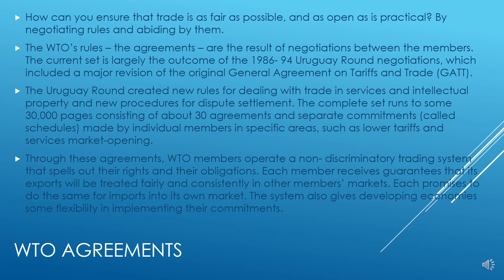The WTO agreements consist of about 30 agreements and separate commitments known as schedules, made by individual members in specific areas such as lower tariffs and services market opening. Through these agreements, WTO members operate a non-discriminatory trading system that spells out their rights and obligations. Each member receives guarantees that its exports will be treated fairly and consistently in other members' markets, and each promises to do the same for imports into its own market. The system also gives developing economies some flexibility in implementing their commitments.